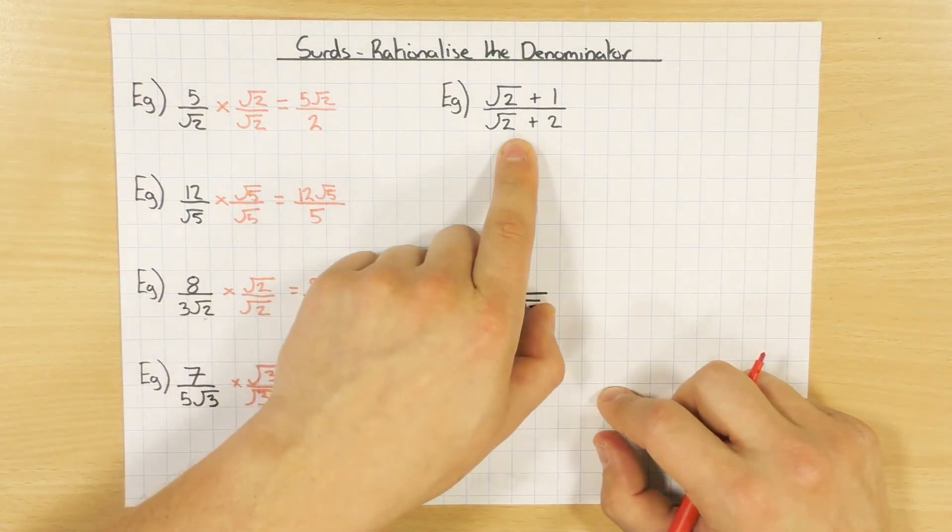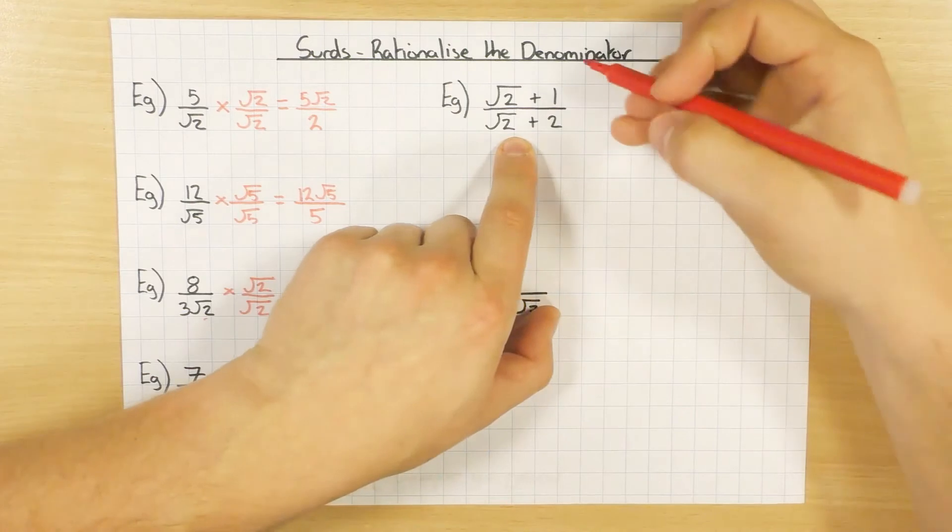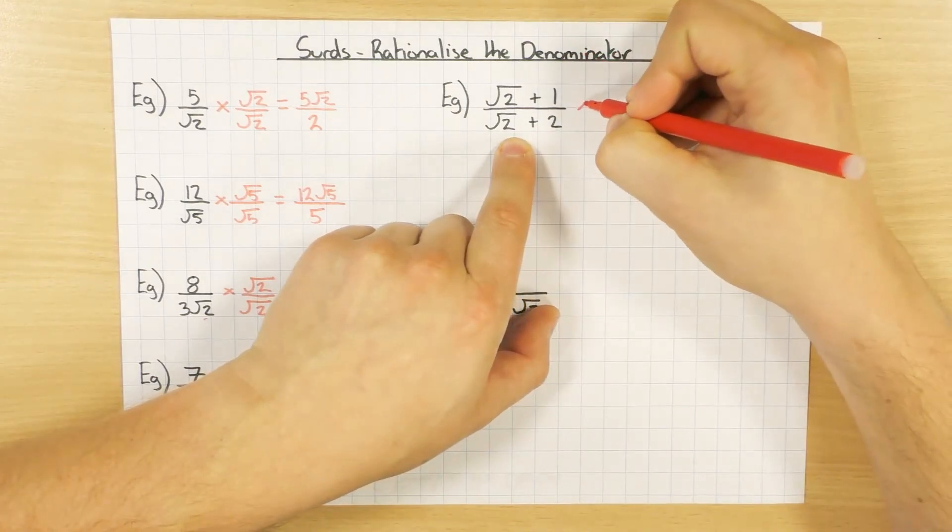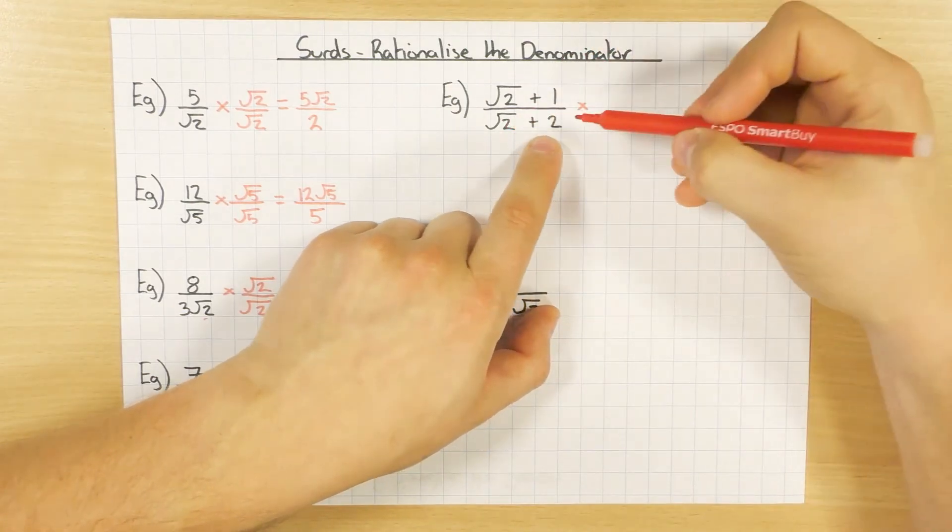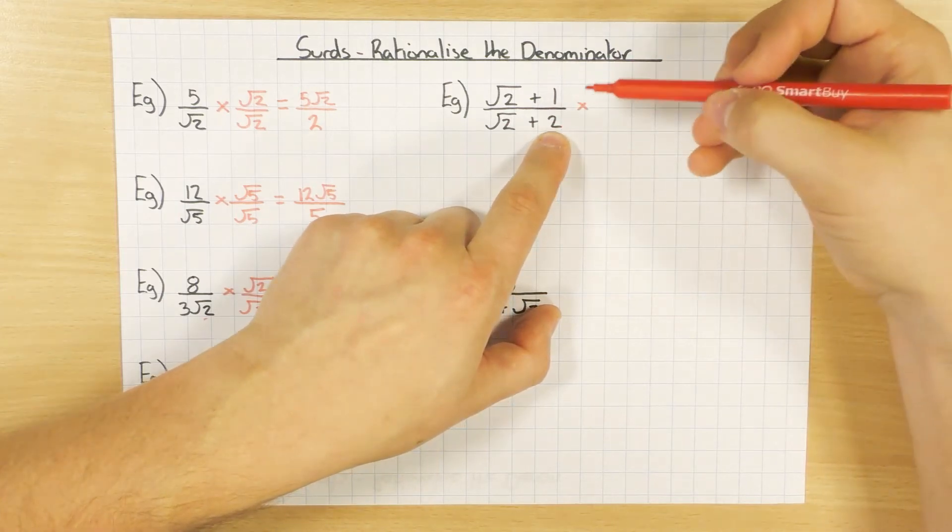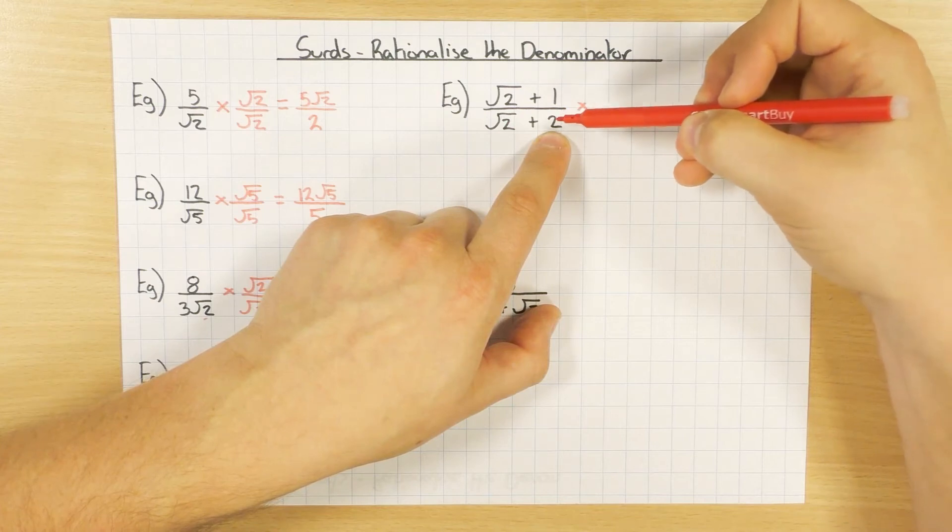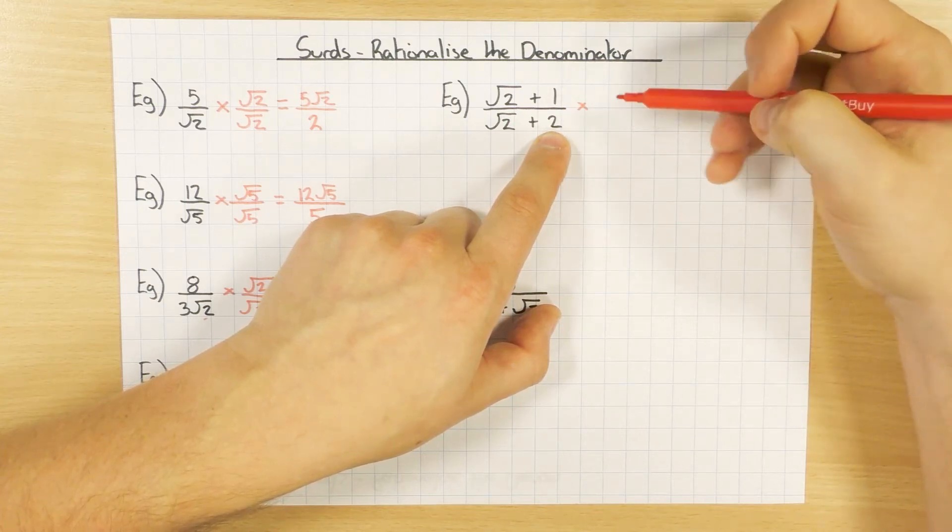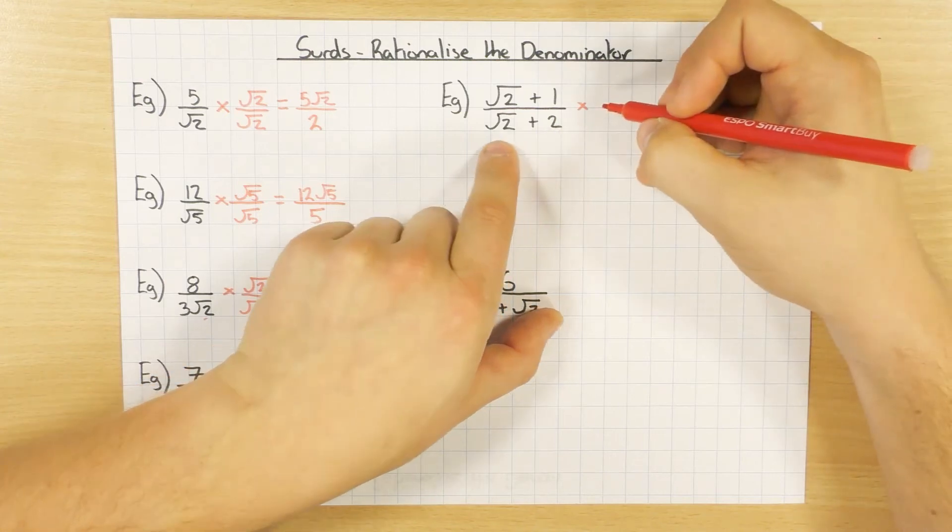This is when it gets a little bit trickier. If you just times top and bottom by root 2, what will happen is that you'll have root 2 times 2, and you'll still have a square root. If you want to try it, by all means do so, but it won't actually get rid of the surd on the denominator. So what we need to do is something a little bit different.